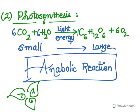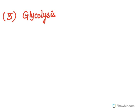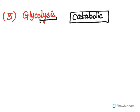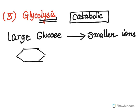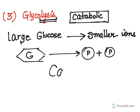Next is number three: glycolysis. There's a helpful hint here — any reaction ending with the suffix '-lysis' (L-Y-S-I-S) you can identify as catabolic in nature. That's a handy tool to remember. In glycolysis, we have a large glucose molecule which is going to give us smaller molecules, hence it is a catabolic reaction.